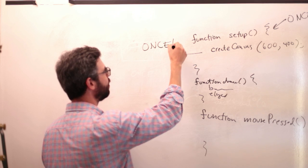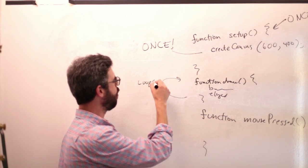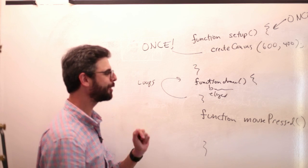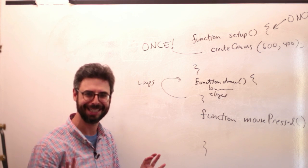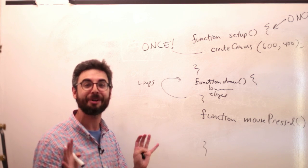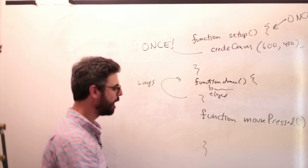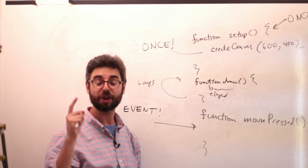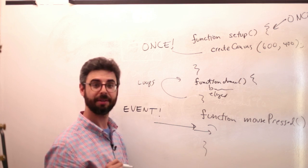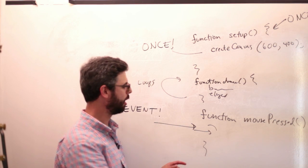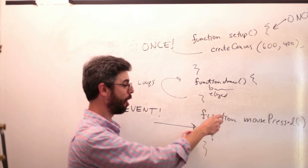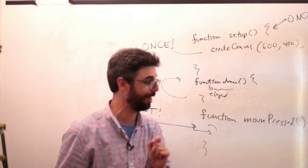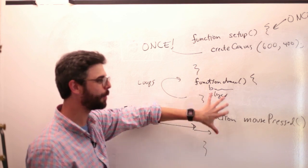I'm going to call it mousePressed. Setup happens once and only once at the beginning. Draw loops over and over again — draw is like a crazy person: I'm going to draw, I'm going to draw, I'm never going to stop drawing. mousePressed is a very patient person, quietly sitting inside, just waiting and waiting. In fact, mousePressed might never ever happen — the program could run and that code will never occur. This is what's known as an event. When the user clicks the mouse, the code in mousePressed is executed. The user clicks the mouse, we take a break from draw, run the code in mousePressed, then draw loops again.